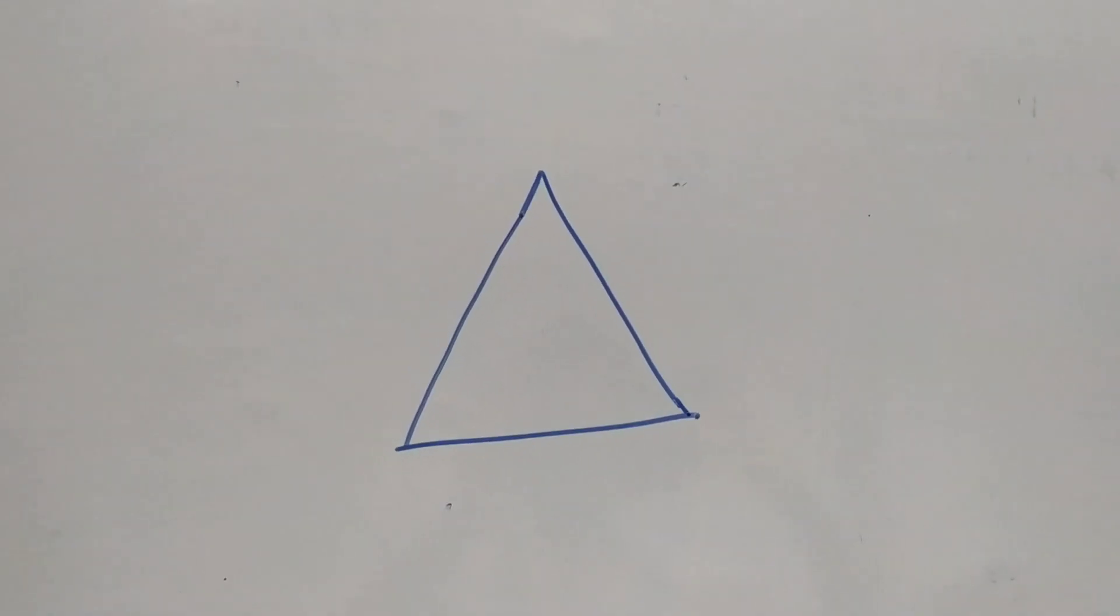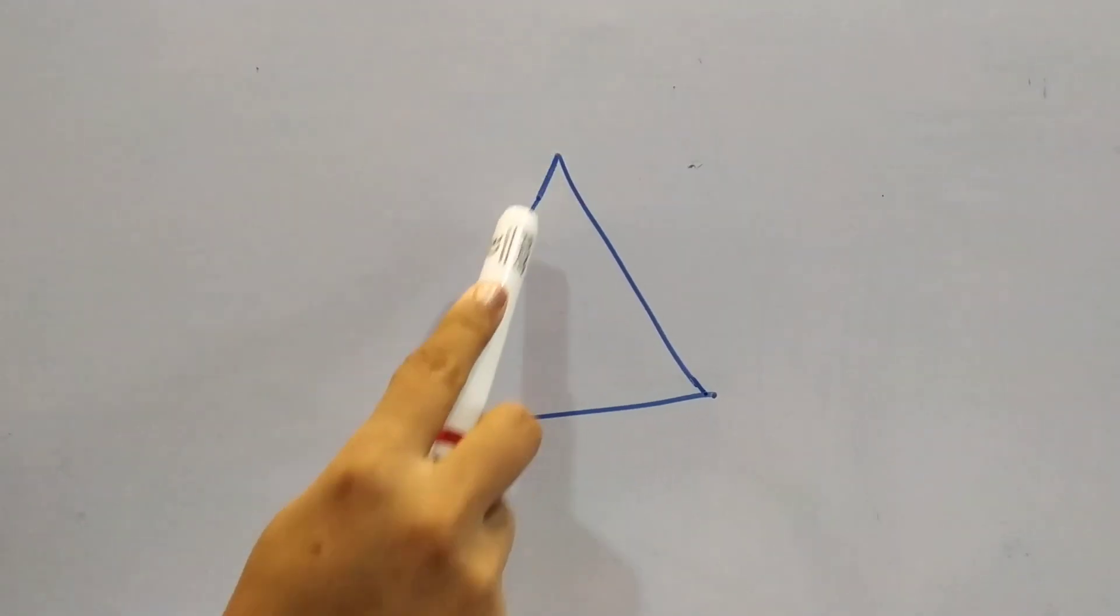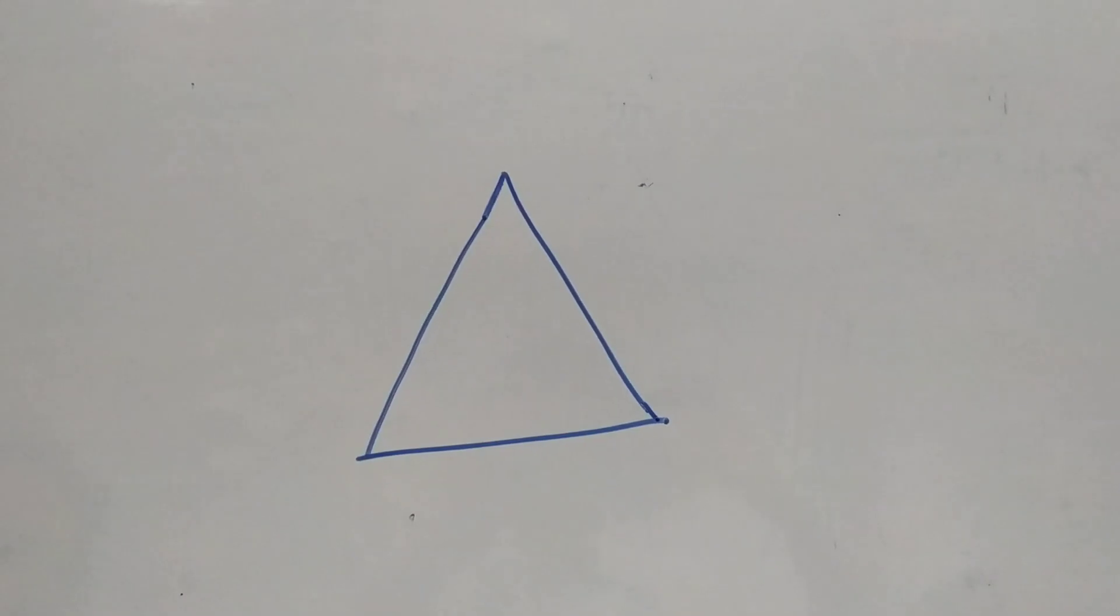Hello LKG children, today we will continue with the same topic, shapes, that is triangle. In my previous video, we had done the revision or introduction of what is a triangle. So let's see, this is a triangle, it can be of different sizes—small, big, or this way.